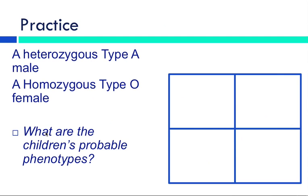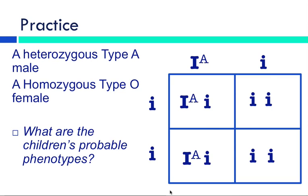So a heterozygous type A male. What does that mean? Well, if he's heterozygous, that means he's big I, little i. And if he's type A, that means the big I gets an A with it. So there's two different things that I'm using here. I'm using heterozygous for big I, little i. And then type A means that the A goes on the I here. And then cross with a homozygous type O female. Well, that obviously can only be one thing. That's little i, little i. What are the children's probable phenotypes? So I do the cross. I get a 50% chance that that child will have type A blood. And I get a 50% chance that that child will have type O blood.